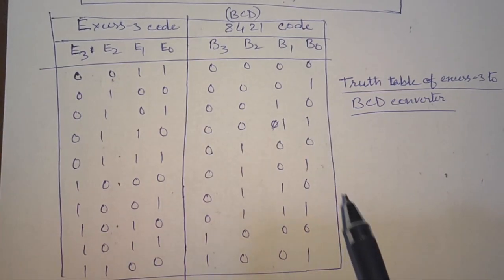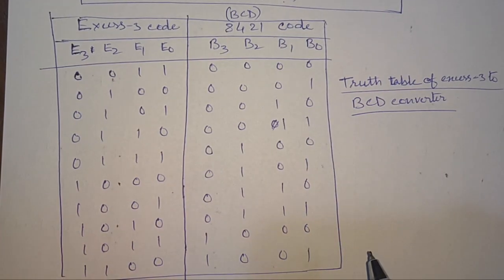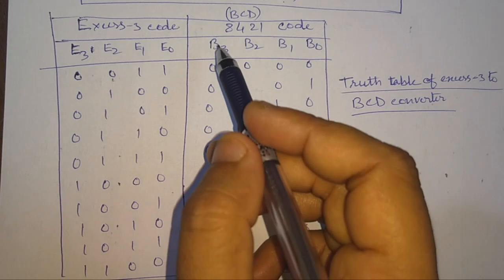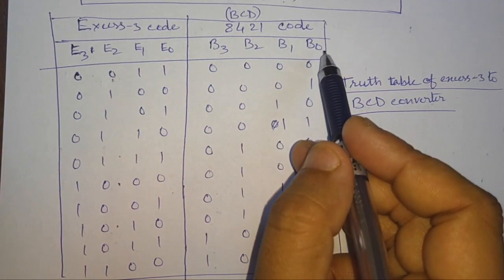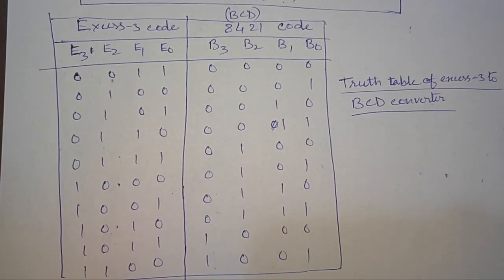From this truth table, we will have to find out the Boolean expressions for B3, B2, B1, and B0. We will see them one by one.